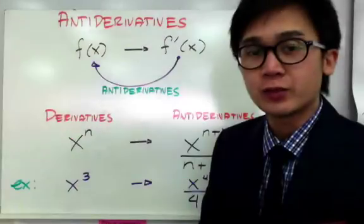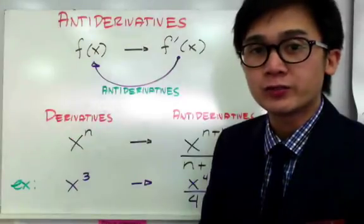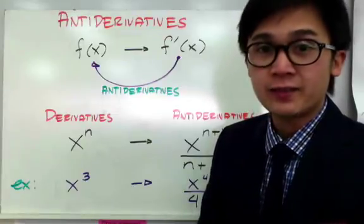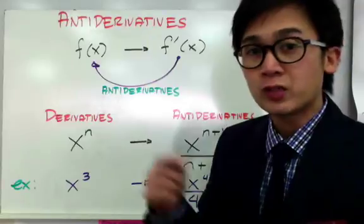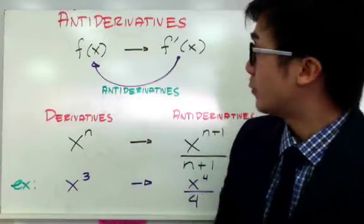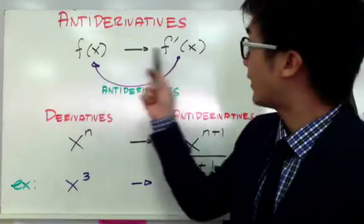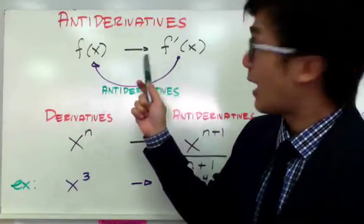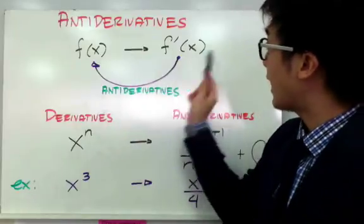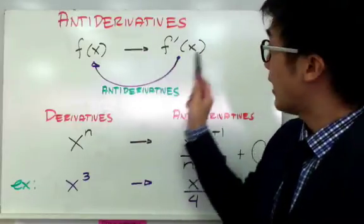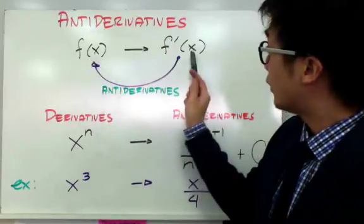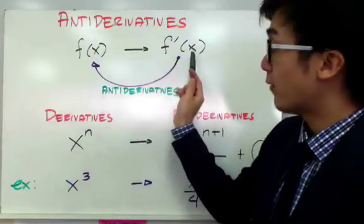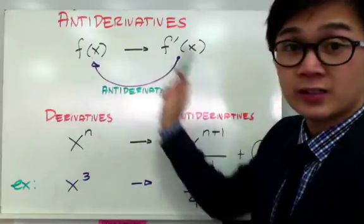In our previous video, we learned a lot of techniques on how to find derivatives of a given function. Now we're going to be focusing on antiderivatives, so we're going to reverse the process. Before, when we are given f of x and we want to find f prime of x, all we need to do is find the derivative. Now, in our lesson today, given f prime of x, you want to find the original function — you will find f of x given f prime of x. This is what antiderivatives look like.